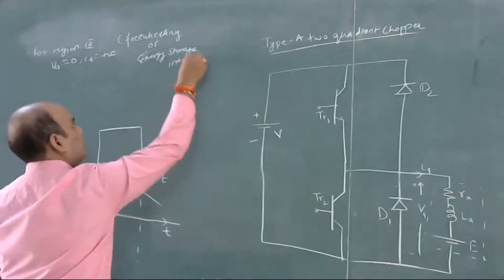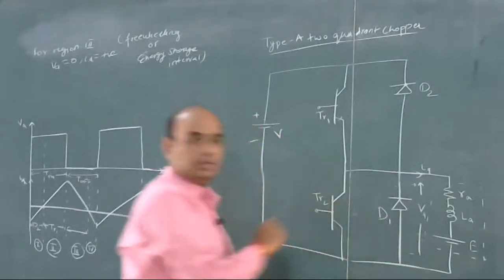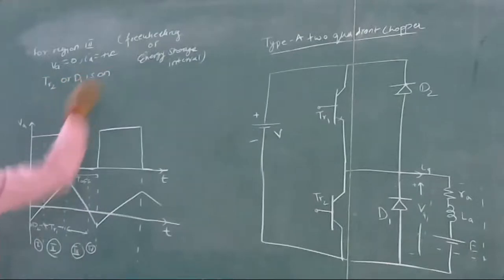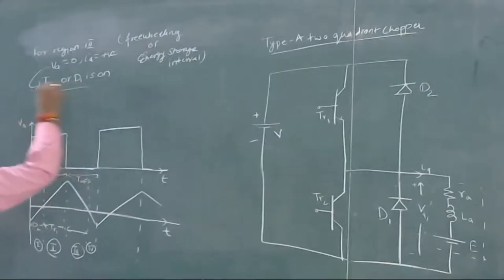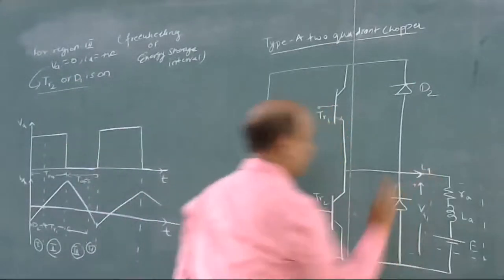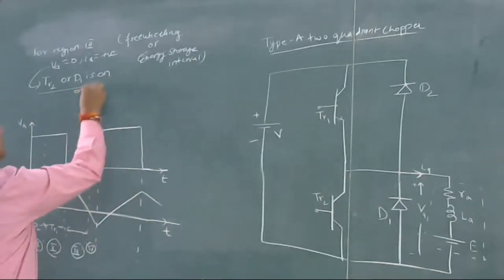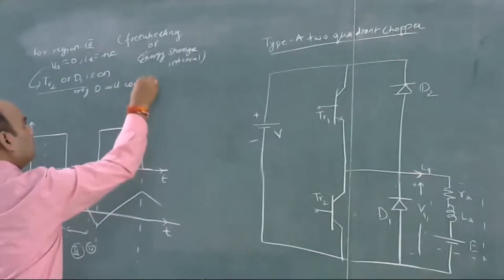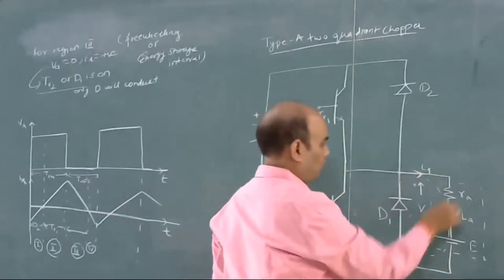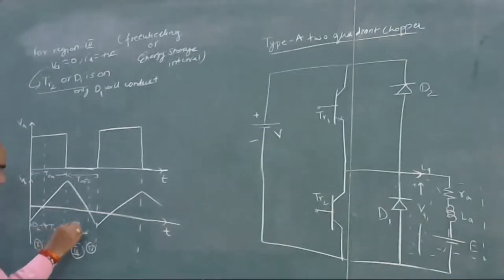When will VA be equal to 0? Either TR2 is on or D1 is on. But since current is positive, D1 will conduct. The armature current Ia freewheels through diode D1. So when Ia is positive, D1 conducts — in region 3, D1 starts conducting.